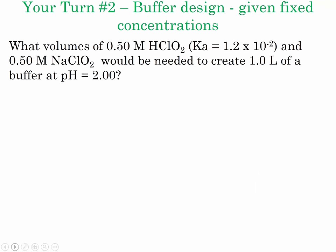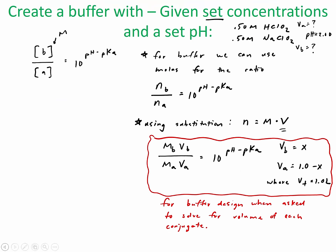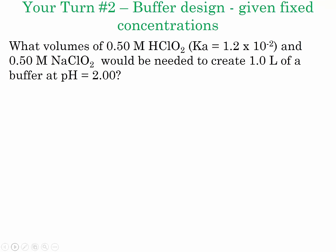The second 'your turn' is: what volumes of 0.5 molar chlorous acid and 0.5 molar of its conjugate would be needed to create one liter of buffer at pH 2.0? The difference here is I gave you set concentrations — you cannot change or dilute them. You're going to want to go back to the substitution form of the equation and apply it to solve that question. That's the end of our video — let's see what you come up with for those 'your turns.'